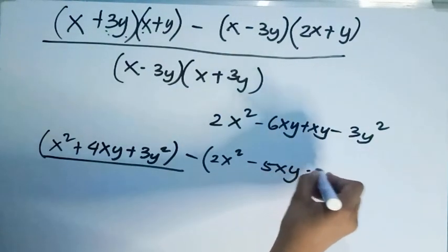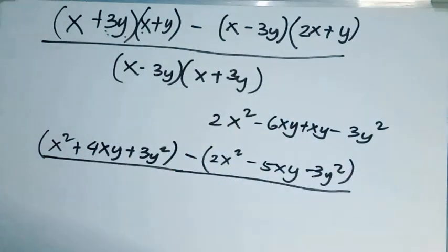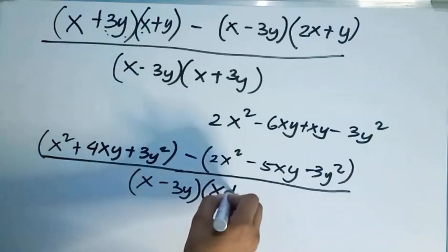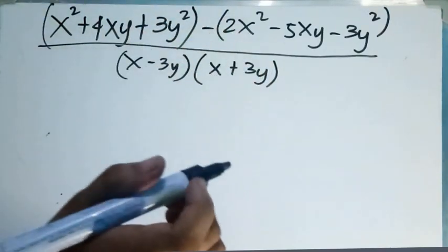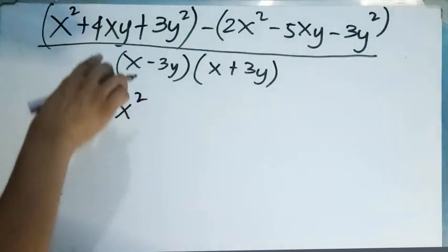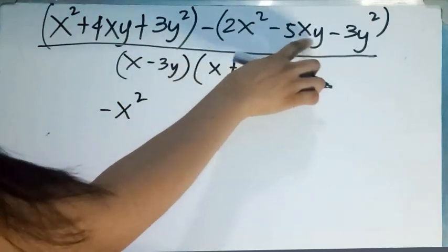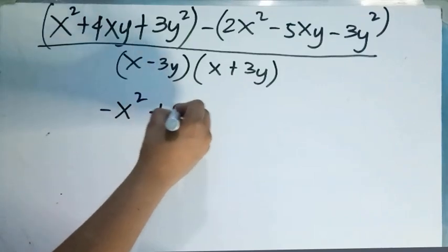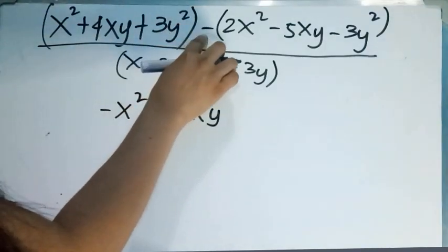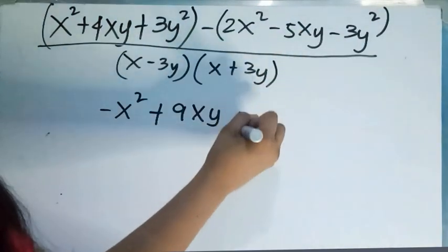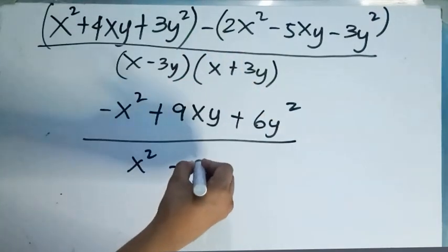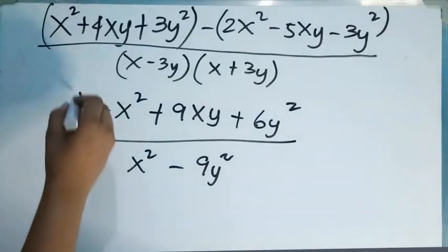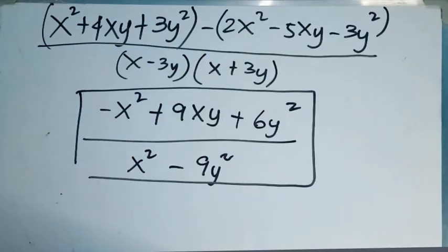Then, copy the denominator: (x minus 3y) times (x plus 3y). Now, let us subtract the results. We have x squared minus 2x squared equals negative x squared. Then, 4xy minus negative 5xy becomes positive 9xy. Then, y squared minus negative y squared becomes positive 2y squared... So, the final answer is negative x squared plus 9xy plus 6y squared all over x squared minus 9y squared.